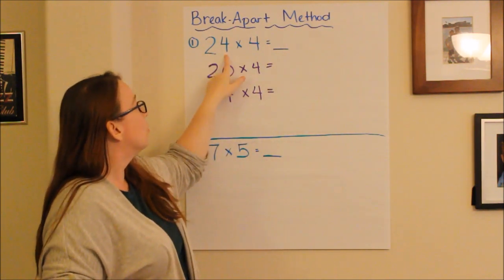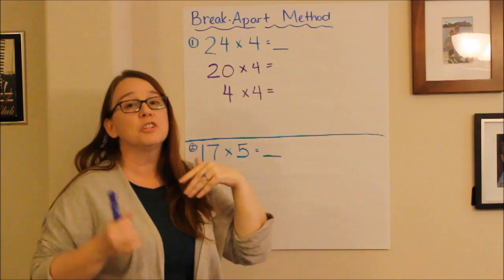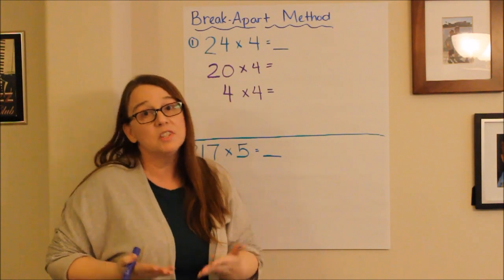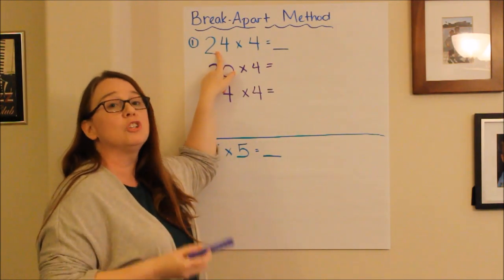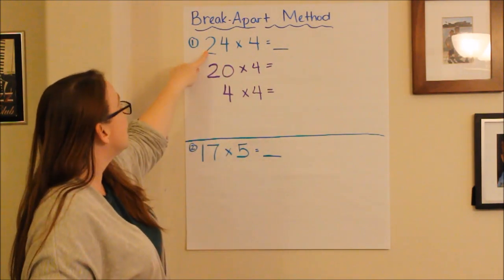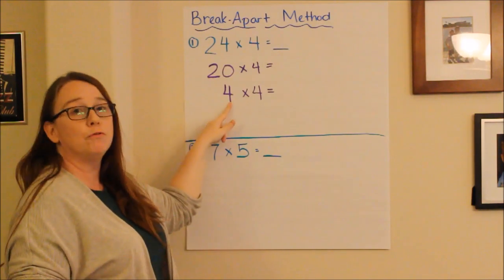I want to know what is 24 times 4. Well, to help me to break this apart into smaller problems that are easier to do, this is what we do. I'm going to take the 24, and I'm going to break it apart into its expanded form. So, here, 24 breaks apart into 20 and 4.